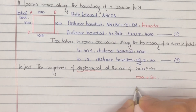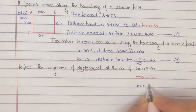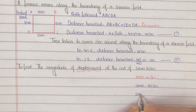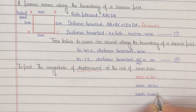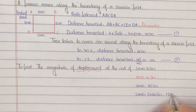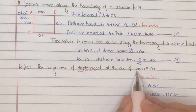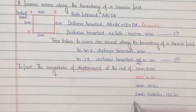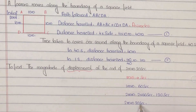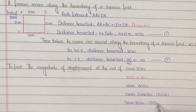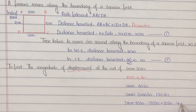We know that 1 minute is equal to 60 seconds, so 2 minutes is equal to 2 × 60 = 120 seconds. Therefore, 2 minutes 20 seconds is equal to 120 + 20 = 140 seconds.